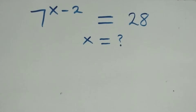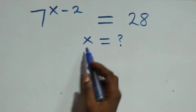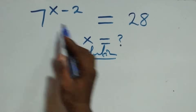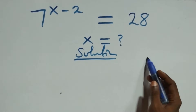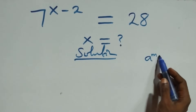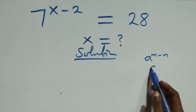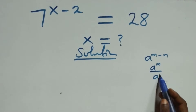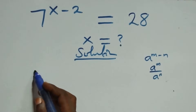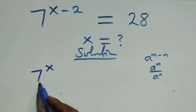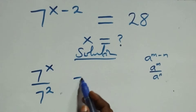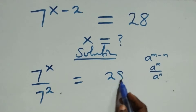Hello, you are welcome. Here we solve a nice exponential equation. We follow the law of indices: when we have a raised to power m minus n, this is the same thing as a raised to power m over a raised to power n. What we have here becomes 7 raised to power x over 7 squared equals 28.